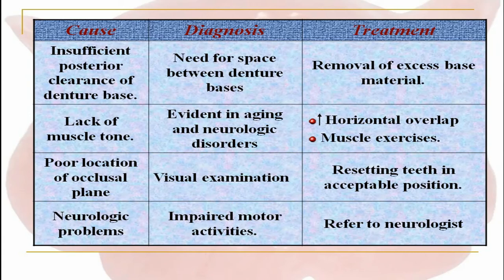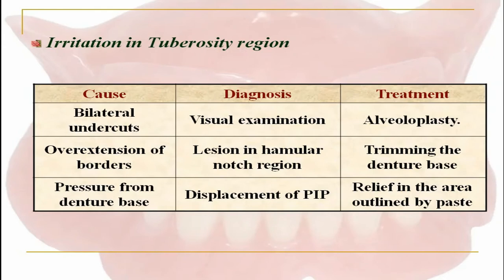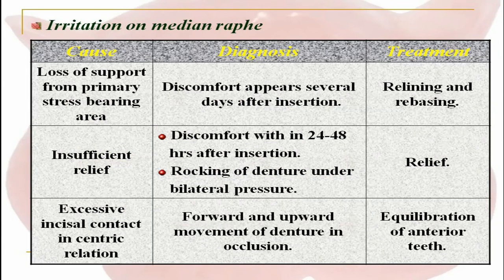Irritation in the tuberosity regions can occur due to bilateral undercuts; diagnosis is visual examination and treatment is alveoloplasty. Overextensions of the borders can be diagnosed by lesion in the hamular notch region; trimming of the denture base is the treatment. If the cause is pressure from the denture base, diagnosis is done by using pressure indicating paste and the treatment is relieving that particular area outlined by the paste.